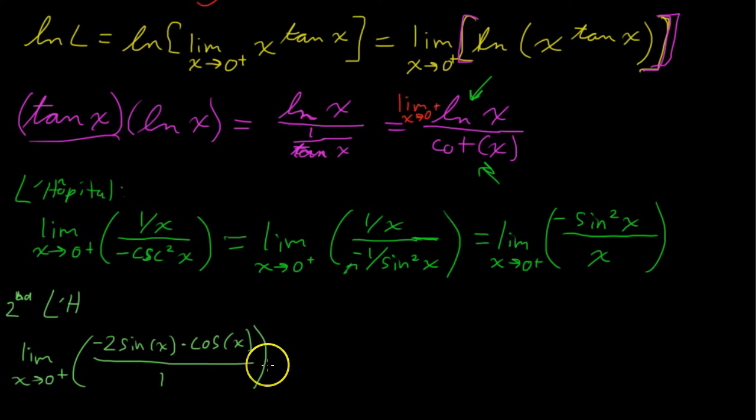Ah, success! Now we have, we do not have an indeterminate form anymore, and we just get 0. The limit of all of this as x approaches 0 from the right is 0.